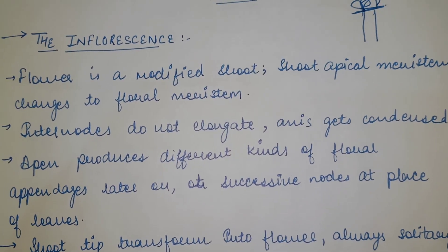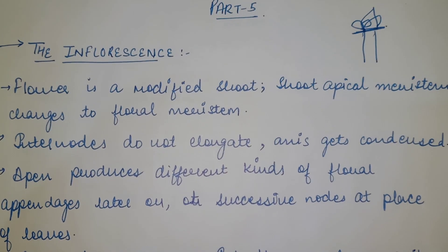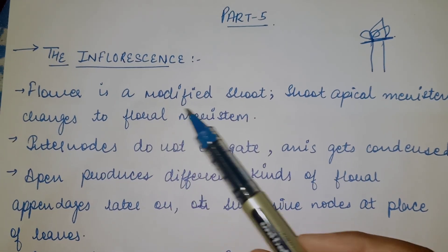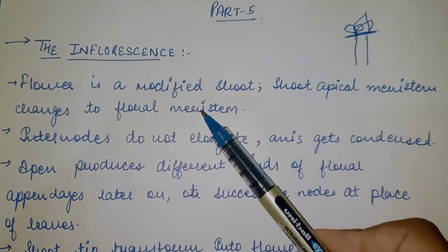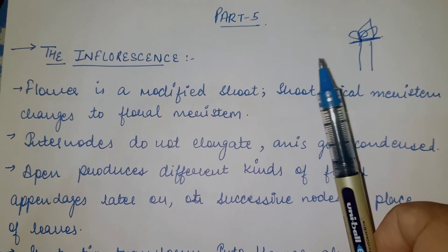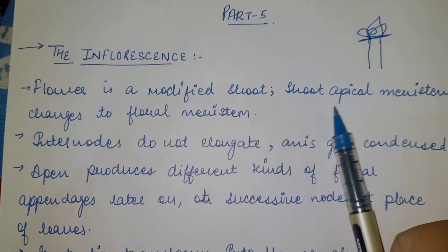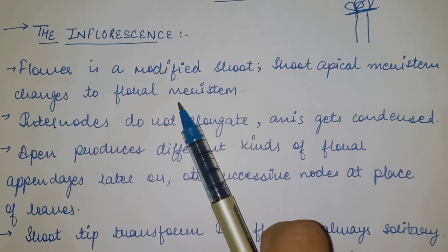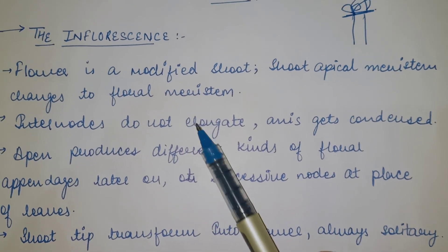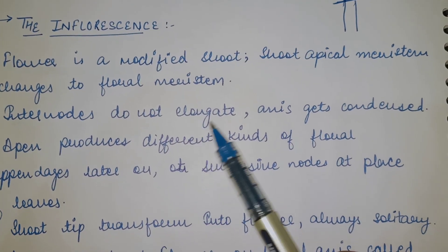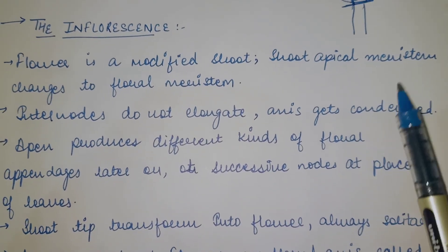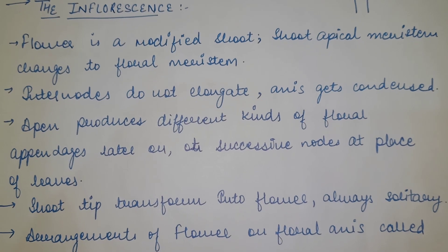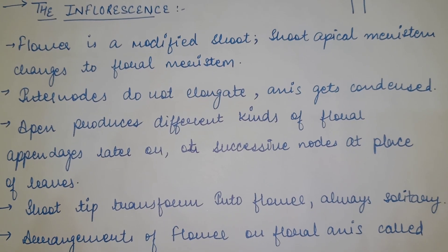Basically, a flower is a modified shoot. The shoot apical meristem — the topmost part of the stem — changes to the floral meristem, and that is where flowers come. The internodes do not elongate; they got condensed. The apex produces different kinds of floral appendages.